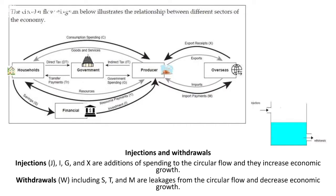Withdrawals are S, T, and M — leakages from the circular flow model that decrease economic activity. S is savings: when households put more money into the bank, it's not moving around the economy, so it's a withdrawal. T stands for tax — direct tax and indirect tax are both taking money away from the economy into the government. And M is import payments: when we buy more products from overseas, we send money out of our economy here in New Zealand and into another country's economy.